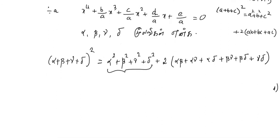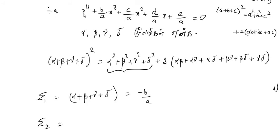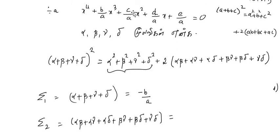For the 4th degree equation, by Vieta's formulas: sigma1 equals alpha plus beta plus gamma plus delta equals minus b/a. Sigma2 equals alpha·beta plus alpha·gamma plus alpha·delta plus beta·gamma plus beta·delta plus gamma·delta equals c/a.